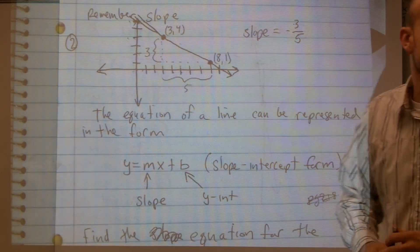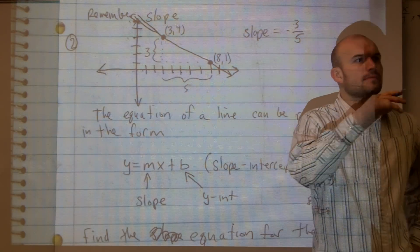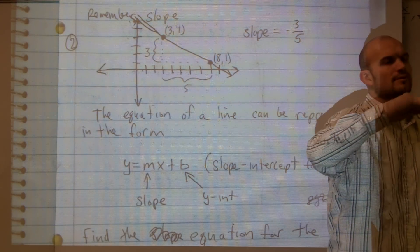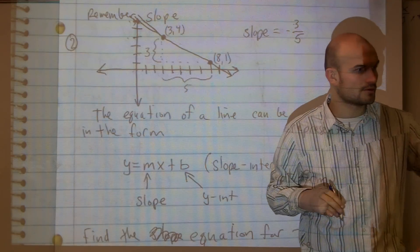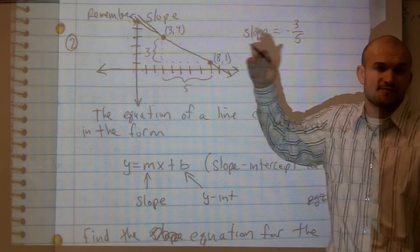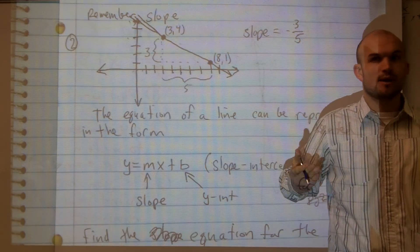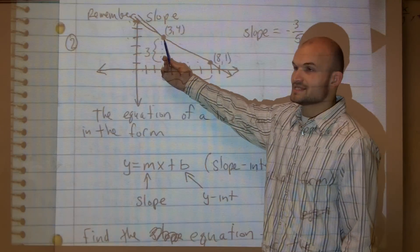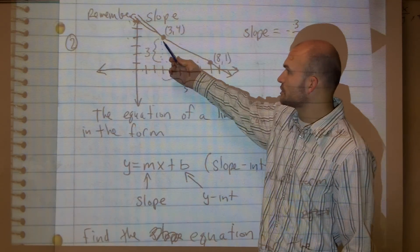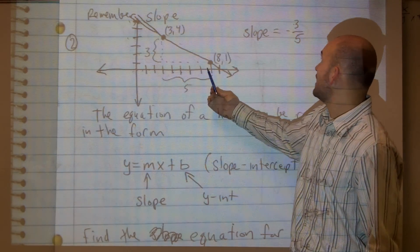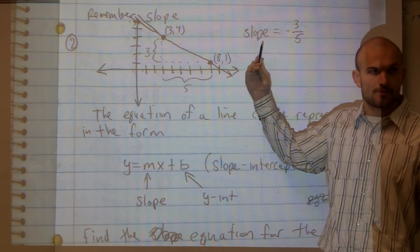All right. John, just have a seat, please. Okay, for this next problem, it's the exact same thing, but now I already told you what the slope was. We found the slope by saying the slope was the change to go from this point to this point. I had to go down 3 and over 5. Since I went down 3, we had a negative slope.